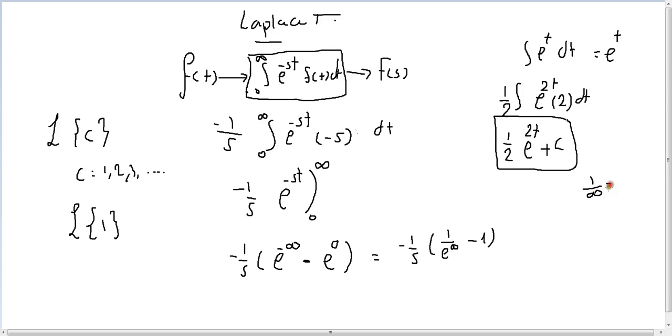So this equals 0. This will equal to 1 over s. So the Laplace of constant 1 is actually 1 over s. What if we want to get Laplace of 2?